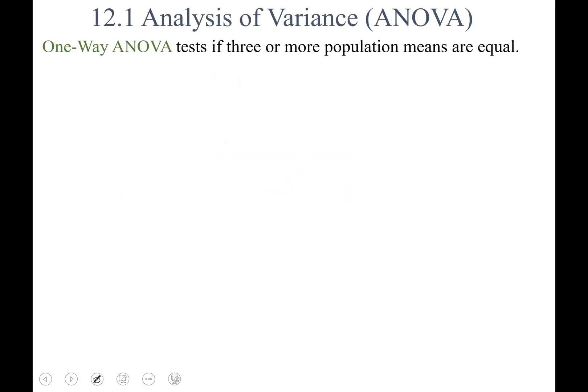Section 12.1 is on one-way ANOVA tests. What an ANOVA test is, a one-way ANOVA test, is a test that three or more populations' means are equal. So when you think of ANOVA, think this is the test about comparing the different means of the populations.